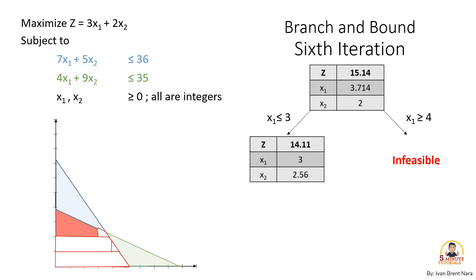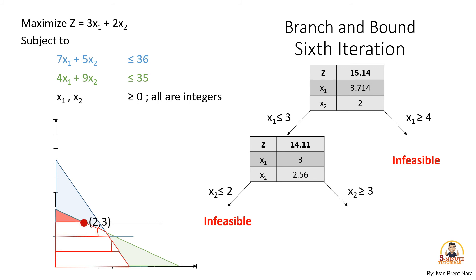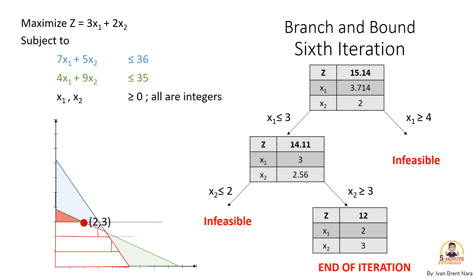For the sixth iteration, branch the problem by selecting an integer value for x2. On the left, we have x2 less than or equal to 2. It turns out that the solution variable is infeasible. And on the right, we have x2 greater than or equal to 3. The new values of the variables are x1 equals 2 and x2 equals 3. Because both the left and right branches have no decimal value, or are already integer values, this will be the end of our iterations.